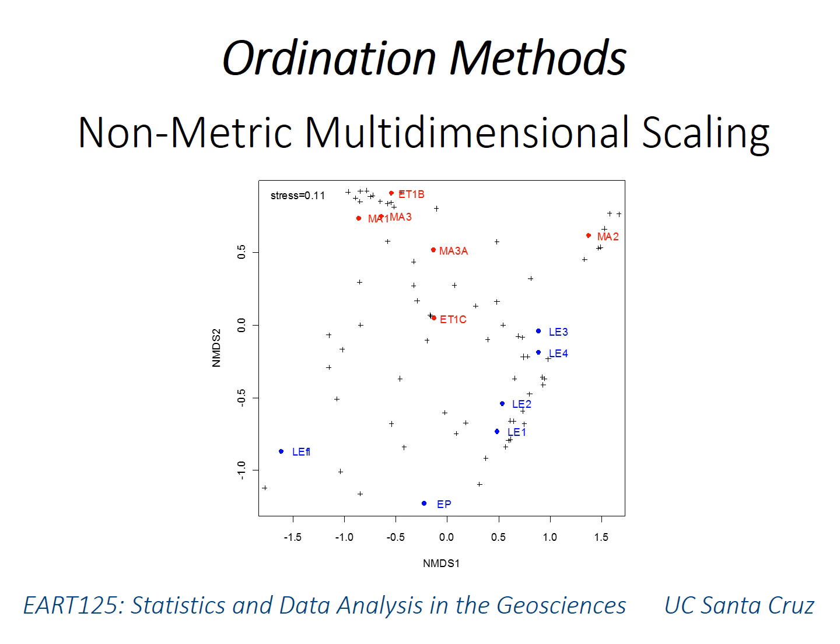Following on from the discussion of principal component analysis in the previous video, this video introduces another ordination method called non-metric multidimensional scaling. The name is obviously kind of a mouthful, so it's often just called NMDS or MDS. It's more commonly been used in biology and also in paleontology, but there are certainly other examples in earth sciences where this could be a good method to use.